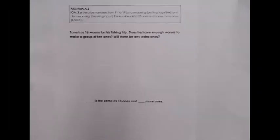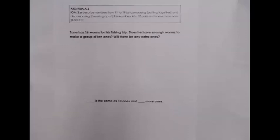Now we look at instructional strategies for AKS 3, IOA 3A: describe numbers from 11 to 19 by composing — putting together — and decomposing — breaking apart — those numbers into 10 ones and some more ones. Note: the writing on screen may appear blurry, but the instructional strategies and models shown will be clear.